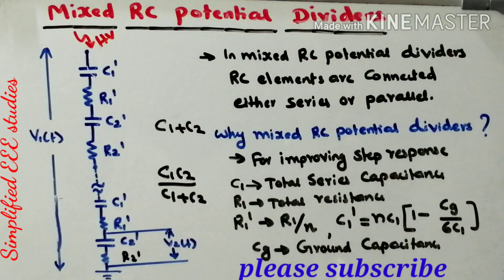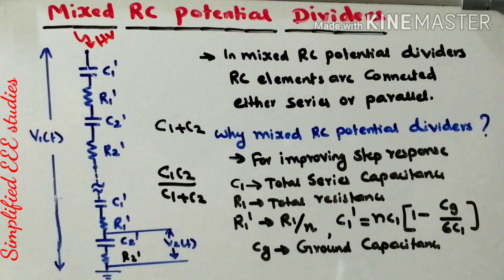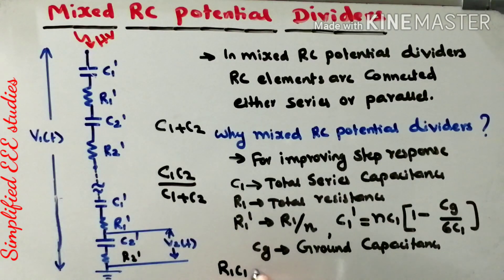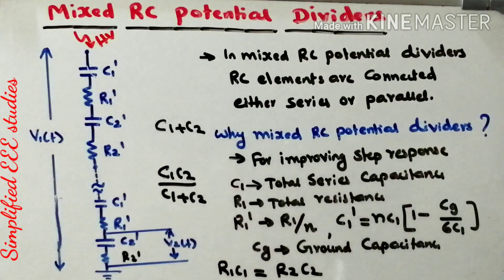These are the basic things you must know before studying the Mixed RC Potential Divider. While doing the design, one more relation you can follow: R1·C1 equal to R2·C2. This relation is very helpful during the design process.